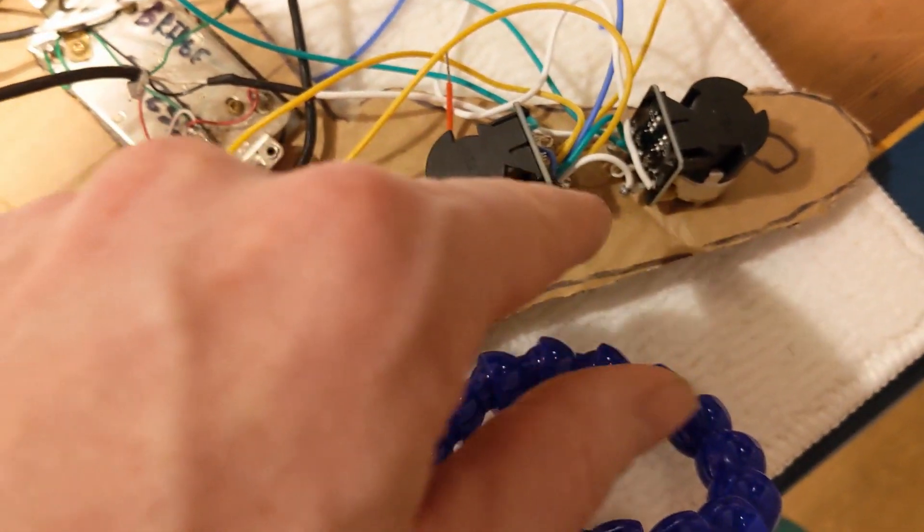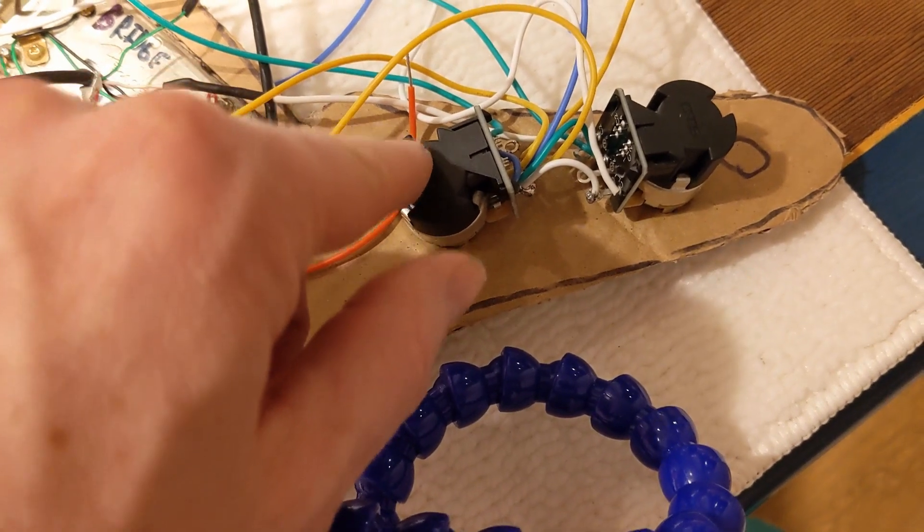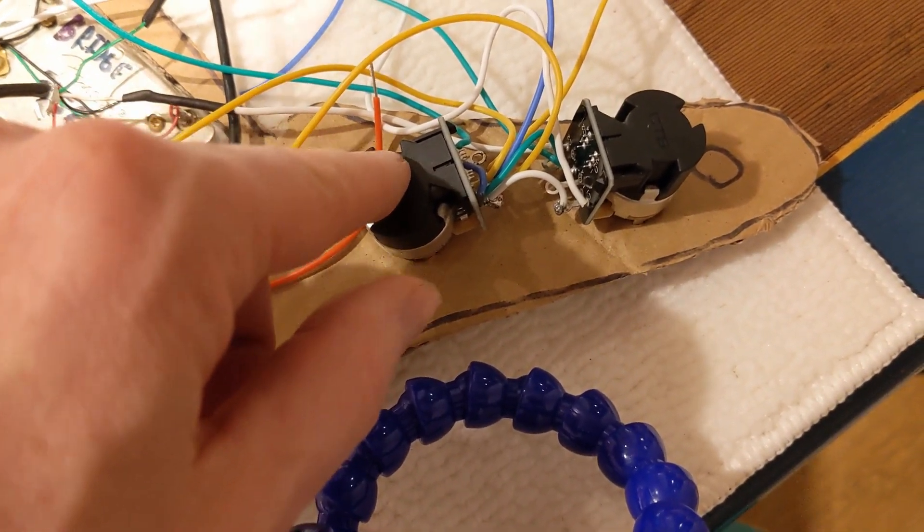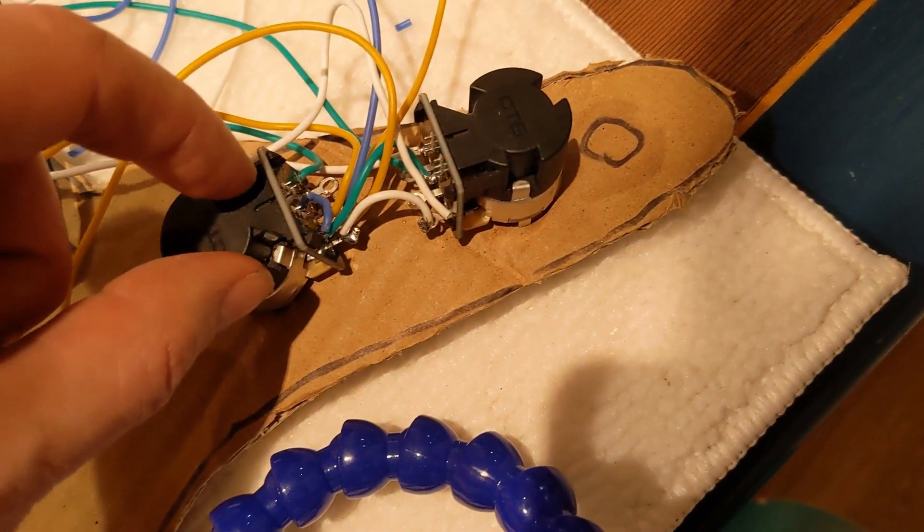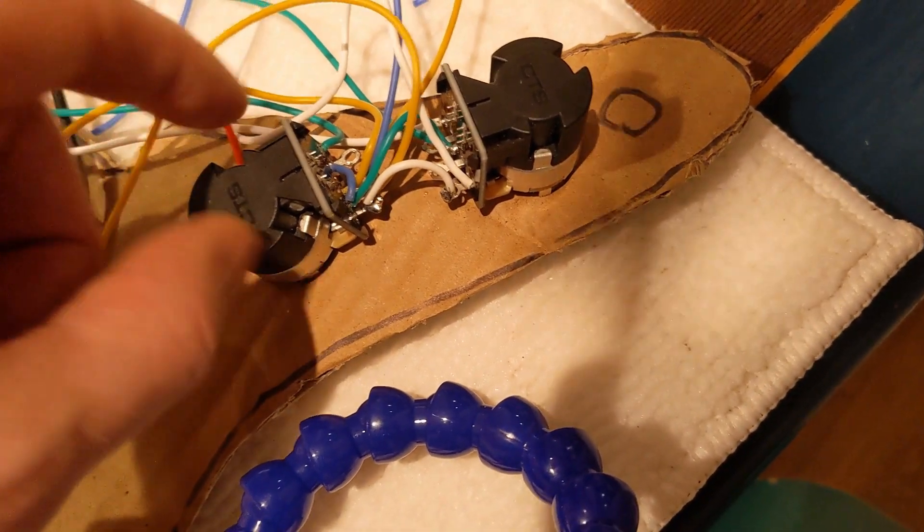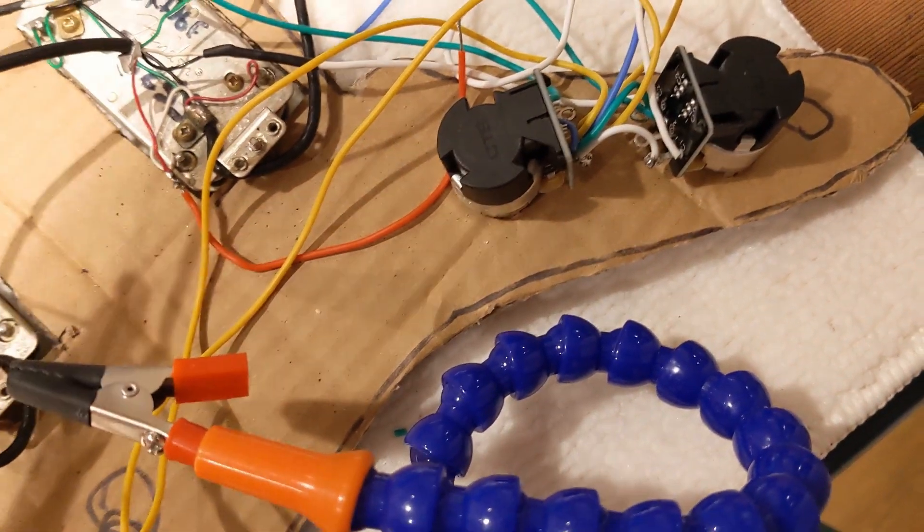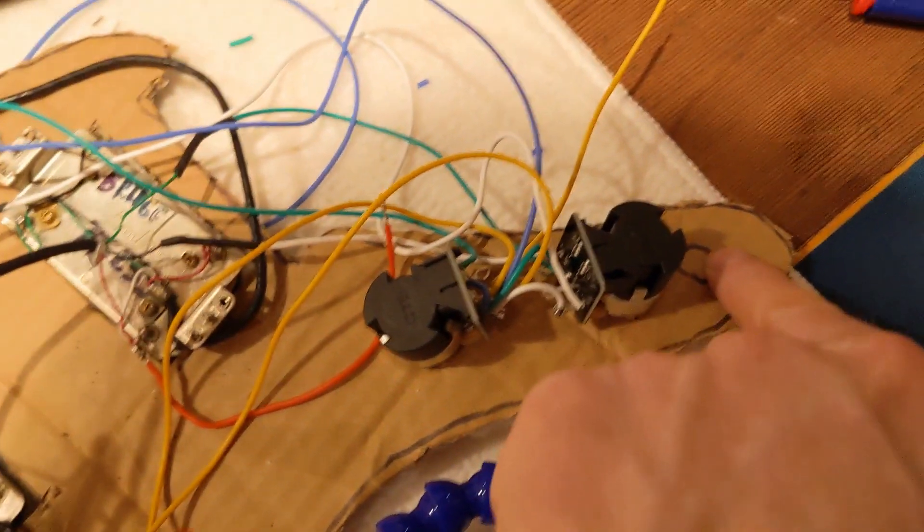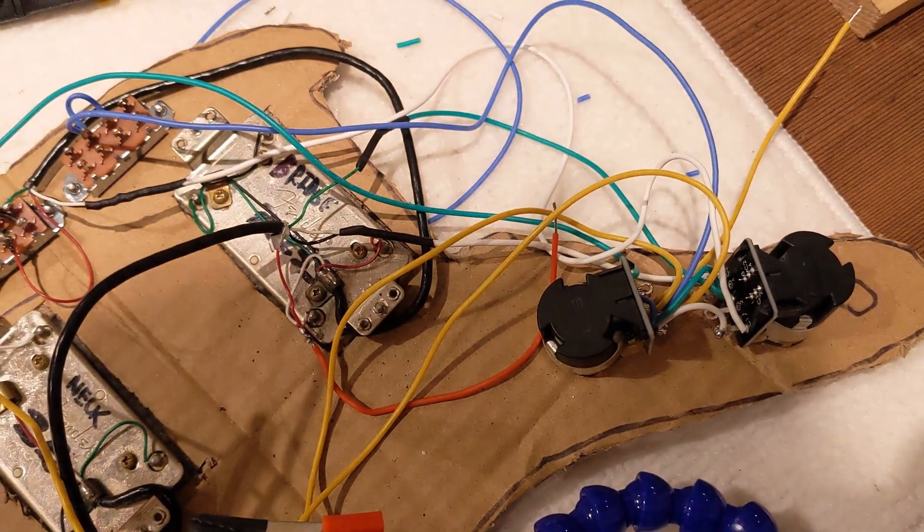Here's the coil split. It's already wired up. I just need to put a cap for the tone, probably going to use a .01. And then this is the series parallel switch. Kill switch, three-way toggle, and the jack. So that's what we got going on there.